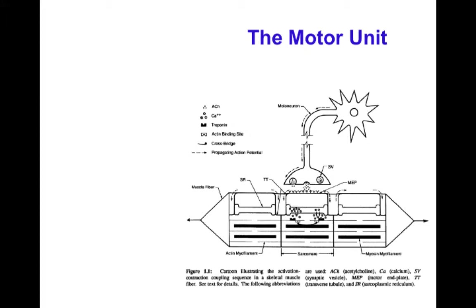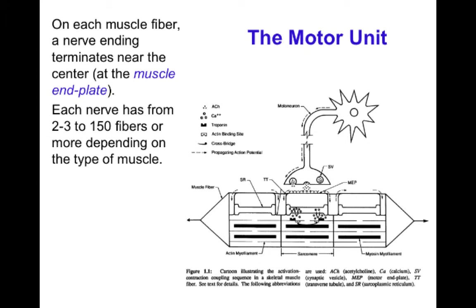In skeletal muscle, activation is by nerves. One nerve fiber doesn't necessarily activate one muscle cell — it can activate one or two, or up to about 100. That group of the nerve and the muscle cells it activates is called the motor unit. The nerve terminal has a specialized synapse very close to the muscle cells, and this one nerve cell will have end plates terminating on all of the muscle cells within its motor unit. This specialized synapse uses acetylcholine as the neurotransmitter to tell the skeletal muscle cell to contract.